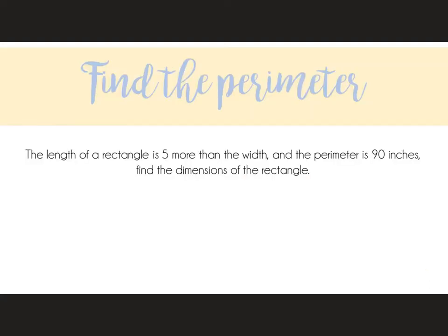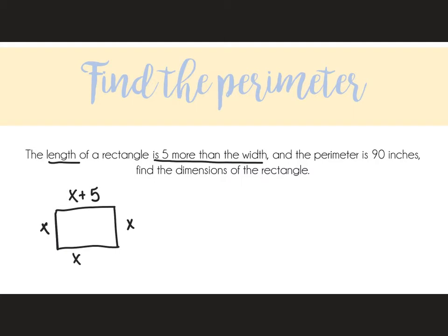In this problem, it says the length of a rectangle is five more than the width and the perimeter is 90 inches. Find the dimensions of the rectangle. It might be helpful if you draw a picture. It says the length is five more than the width, so if the width is x, the length is five more than that — we know that would be x plus five. I know the perimeter is 90, so I'm going to add up all the sides: x plus x plus five plus x plus x plus five equals the perimeter.